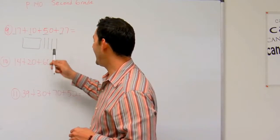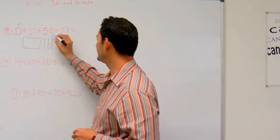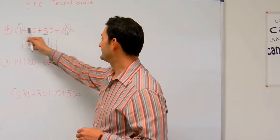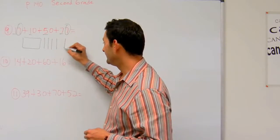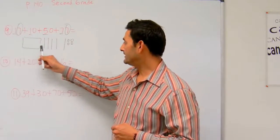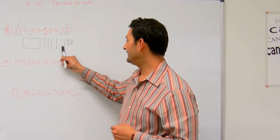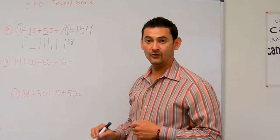Now how many do I have in the ones place? I've got a 7 there, 0, 0, and I've got a 7 there. 7 and 7 is 14. That's another bundle of 10, plus 4 more. So now I have 100, 10, 20, 30, 40, 50, 51, 52, 53, 54. So number 9 is 154.